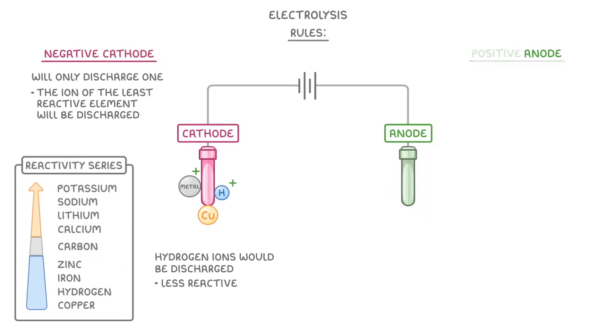Over at the anode, which has a positive charge, we have a similar problem. As well as the negative ion from our compound, which could be something like a nitrate ion or a bromide ion, we'd also have hydroxide ions. This time though, the rule to decide which will be discharged is a bit easier.